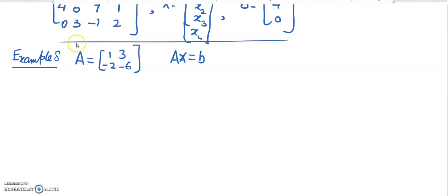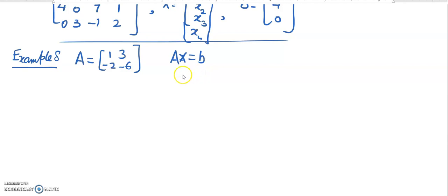Let's do one example. In this case, if we have a system of equations Ax = B, where A is represented by the matrix [1, 3; -2, 6], can we tell that for any choice of B, this system will have a solution?